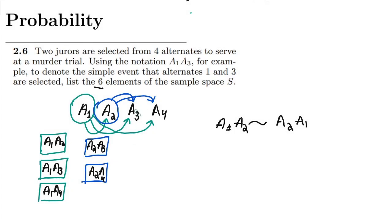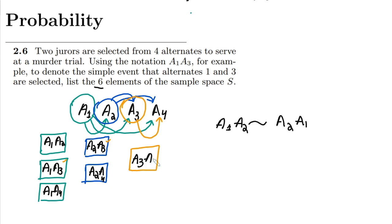Now the last starting point is a3. If I go left and try a3 a1, I already have that combination; and a3 a2 is also already covered. Since the sequence doesn't matter — a2 a3 means a3 a2 — I go to the right side, and the only new combination is a3 with a4, giving a3 a4.